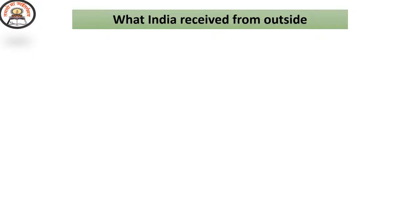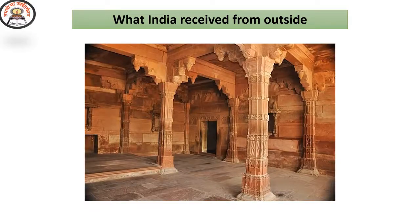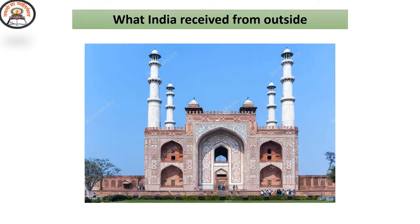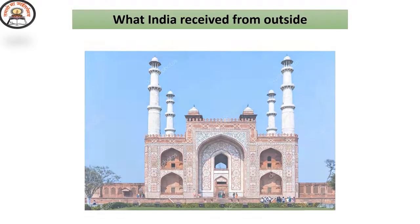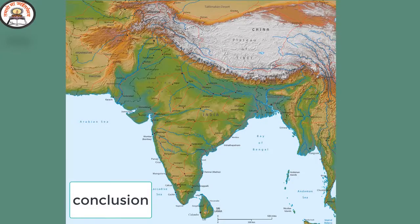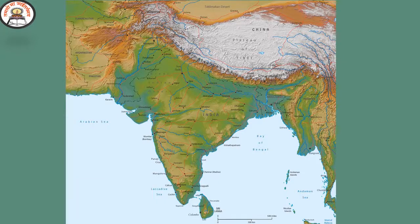Let's see how the exchange of ideas influenced India. The influence of Greek architecture can be seen in many parts of India. Similarly, we can see the influence of Persian architecture in the forms of minarets and domes. In this lesson, we have learned the significance of latitudes and longitudes and India's size and location. We also learned the strategic significance India enjoys at the head of the Indian Ocean. We concluded by learning the significance of mountain passes in the exchange of goods and ideas with the outside world.